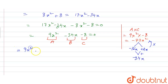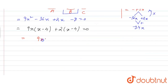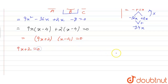Writing -34x as -36x + 2x: 9x² - 36x + 2x - 8 = 0. Taking 9x common from the first pair gives (x - 4), and 2 common from the second pair also gives (x - 4). So (9x + 2)(x - 4) = 0, giving x = -2/9 or x = 4.